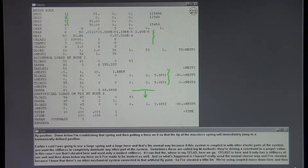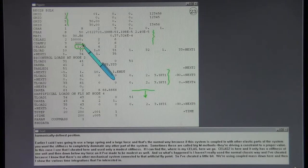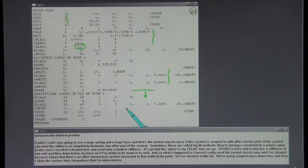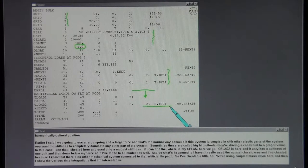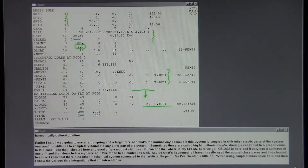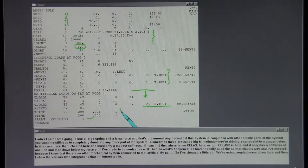CELAS II is here and it only has a stiffness of one unit, and my force on it I've made to be modest as well. I haven't really used the normal classic way. I've cheated because I know that there's no other mechanical system connected to that artificial fly point. We're using coupled mass down here and then I show the various time integrations that I'm interested in.